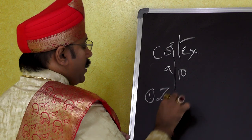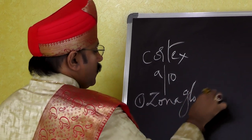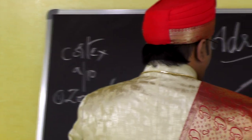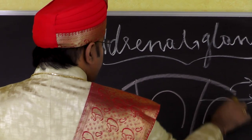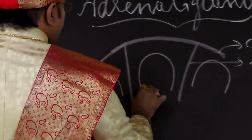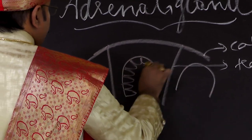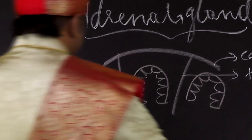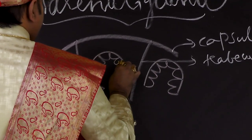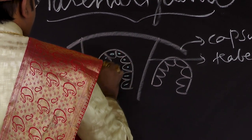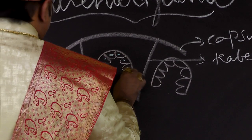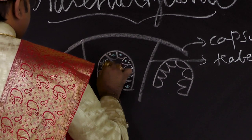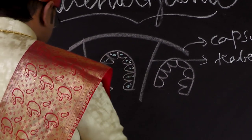The first zone is the zona glomerulosa. It is made up of inverted U-shaped groups of columnar cells. These cells have a deep-stained nucleus and vacuoles are present within them.